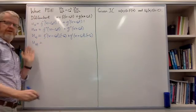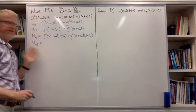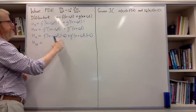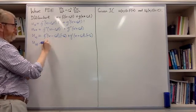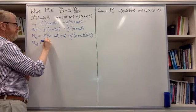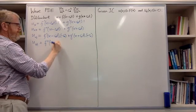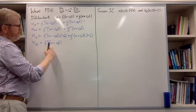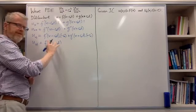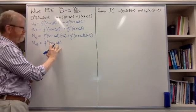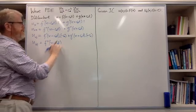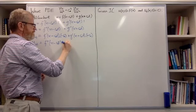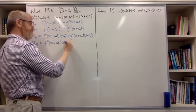The second derivative with respect to time is similar. Differentiate f-dashed to get f-double-dashed of its argument x minus c-star t, then the derivative of that argument with respect to t gives another minus c-star, so we get a factor of minus c-star squared from the f term.